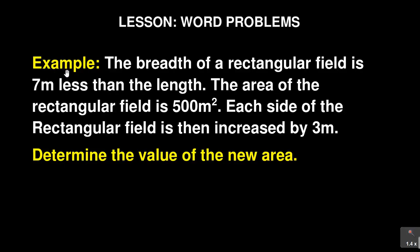So let us look at this question. It's a word problem. It says the breadth of a rectangular field is seven meters less than the length. The area of the rectangular field is 500 square meters. Then it says each side of the rectangular field is then increased by three meters. And then it says determine the value of the new area. So we want to find the new area in this case.